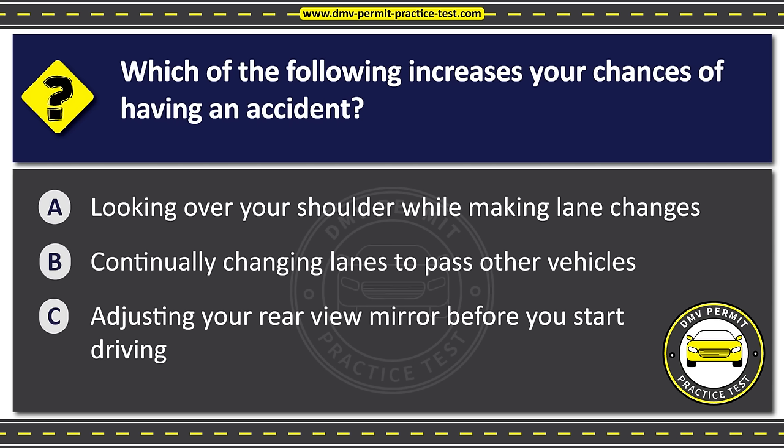Question thirty-six. It is illegal for a person 21 years of age or older to drive with a blood alcohol concentration that is at or more. Option A: One-tenth of one percent. Option B: Eight-hundredths of one percent. Option C: Five-hundredths of one percent. The correct answer is Option B: Eight-hundredths of one percent.